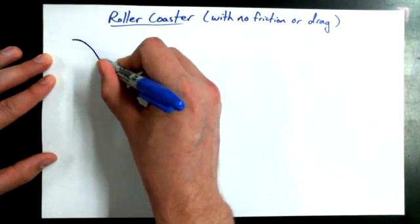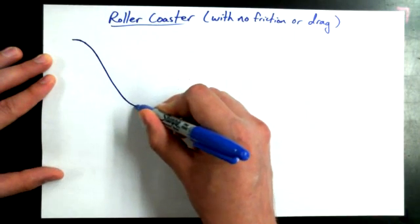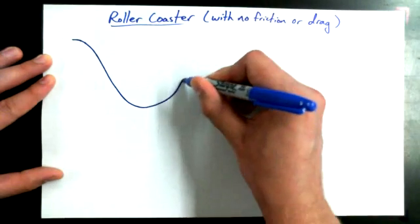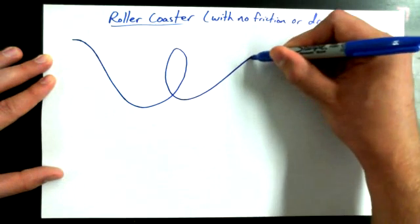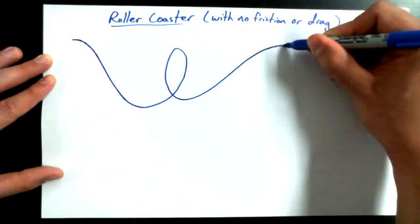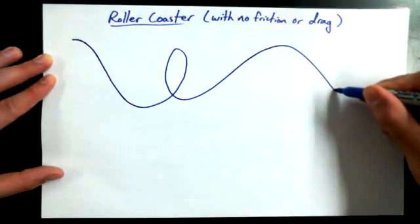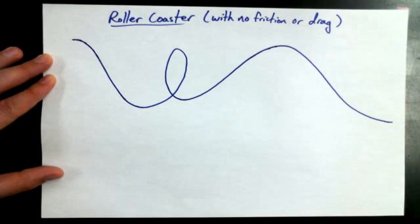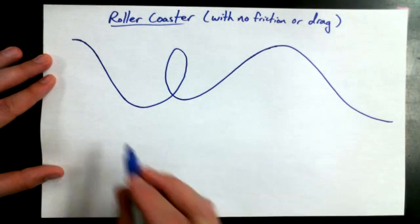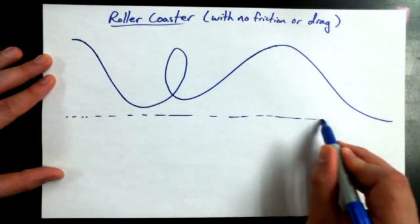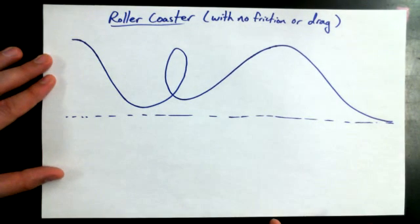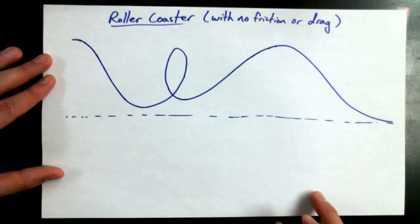It's going to start off with a high hill, then it's going to dip, it's going to have a loop, it's going to have another high hill but not as high as the first one, and then it's going to come down to some finish line. I'm going to draw a dotted line across the bottom of this page to show where the ground is at this amusement park under this roller coaster.